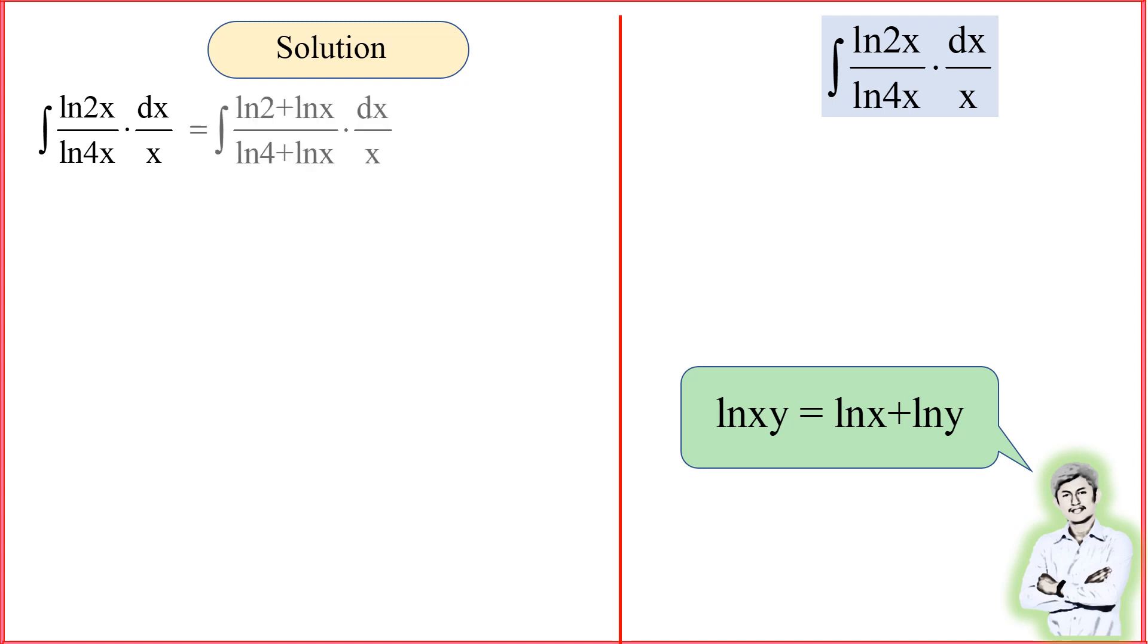What I'm going to do is separate this part together where you can see 2x here. I can write ln(2) plus ln(x). At the same time, I also separate the denominator where it's ln(4) plus ln(x) there, and this part dx over x I put within the same right.